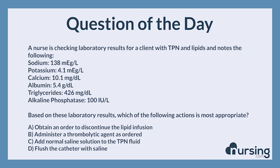Based on these laboratory results, which of the following actions is most appropriate? A. Obtain an order to discontinue the lipid infusion. B. Administer a thrombolytic agent, as ordered. C. Add normal saline solution to the TPN fluid. D. Flush the catheter with saline.